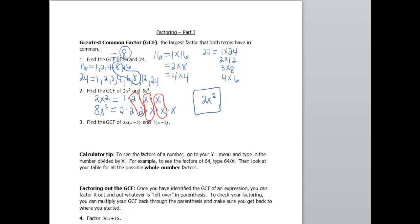Next: 3x(x − 5) and 7(x − 5). Your first instinct might be to multiply this out — don't do that, it's already factored. Writing out the factors: the first term is 3 times x times (x − 5), and the second is 7 times (x − 5). What do both have in common? There's an (x − 5) in both of them. So the GCF is (x − 5), which is technically a factor of both terms.